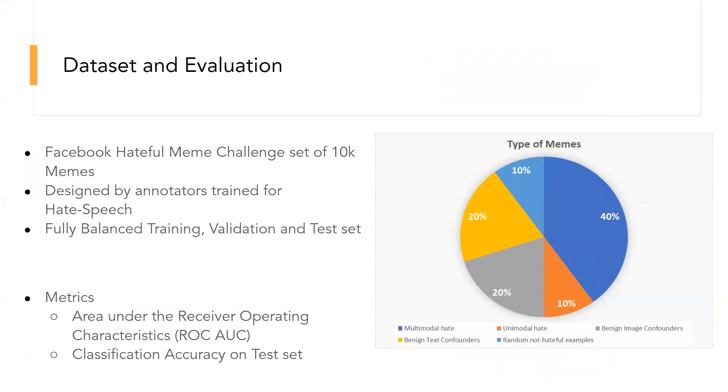The dataset comprises of five different types of memes: the multimodal hate, where benign confounders were found for both modalities; the unimodal hate, where one of the modalities were already hateful on their own; the benign image and benign text confounders; and some random non-hateful examples.